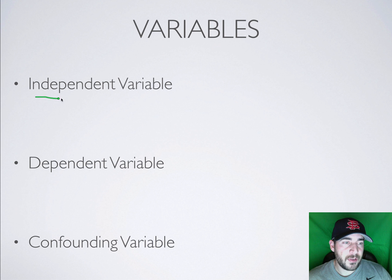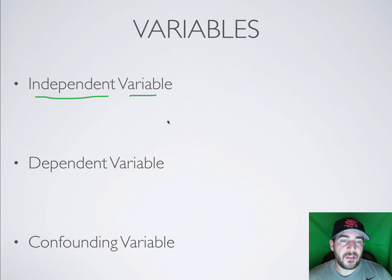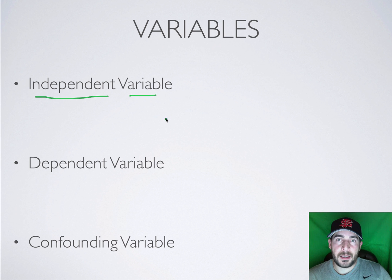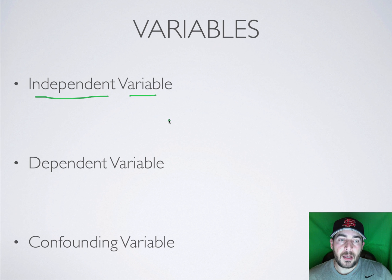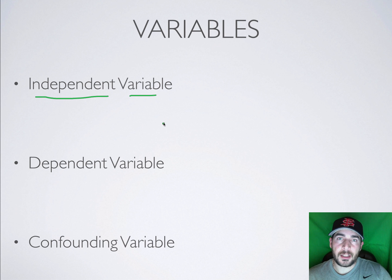An independent variable is the variable that you are manipulating in the research project or the research experiment. It's a variable that you are changing, that you personally are doing something with.